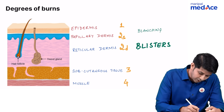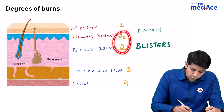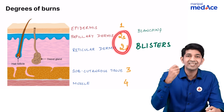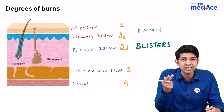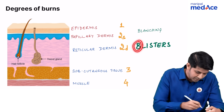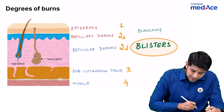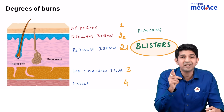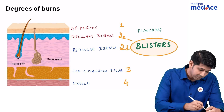Now it's important for you to know that two — that is the second degree burn — is the second letter in the alphabet, which is B. So the presence of blisters is a characteristic feature of second degree burns.